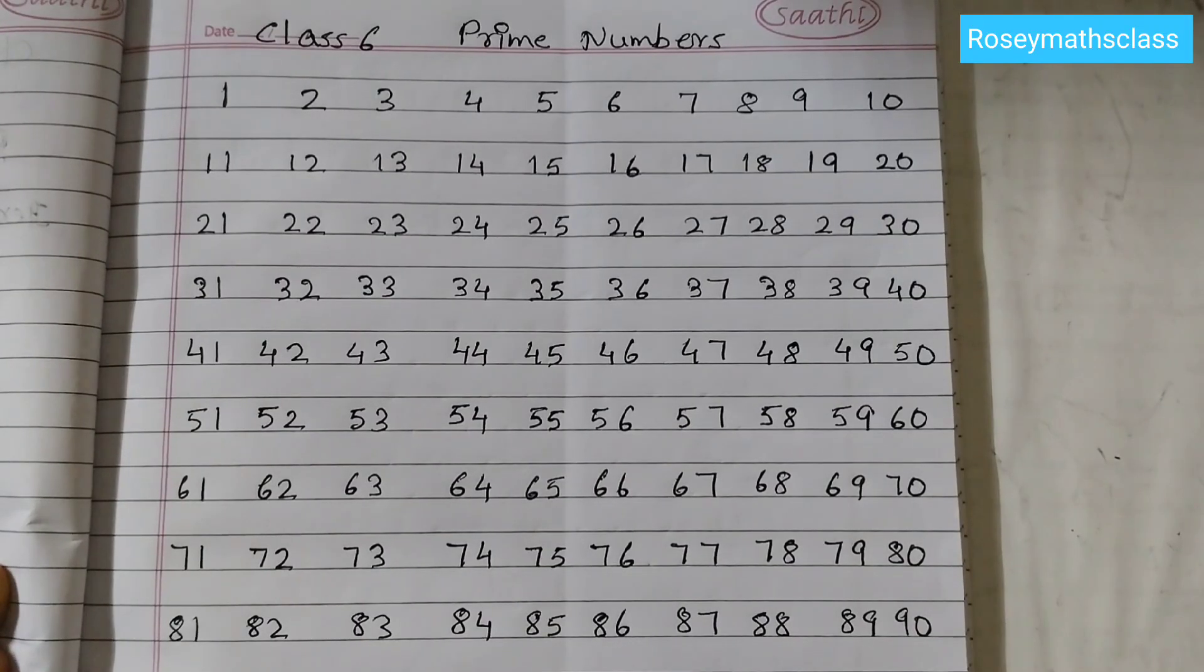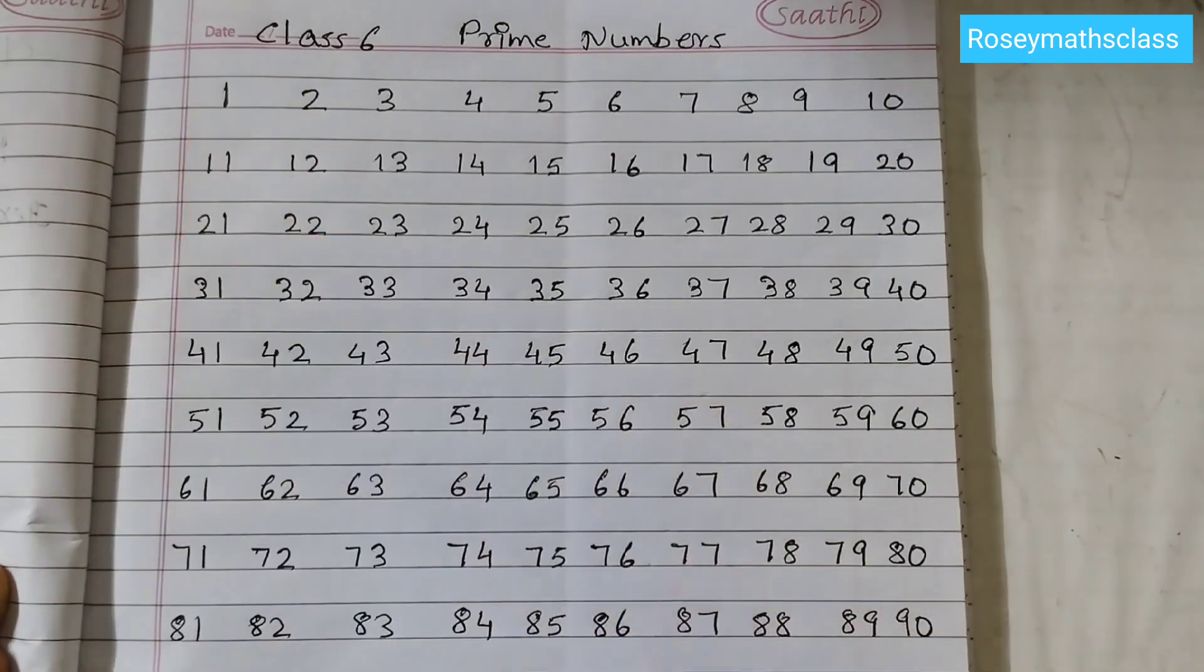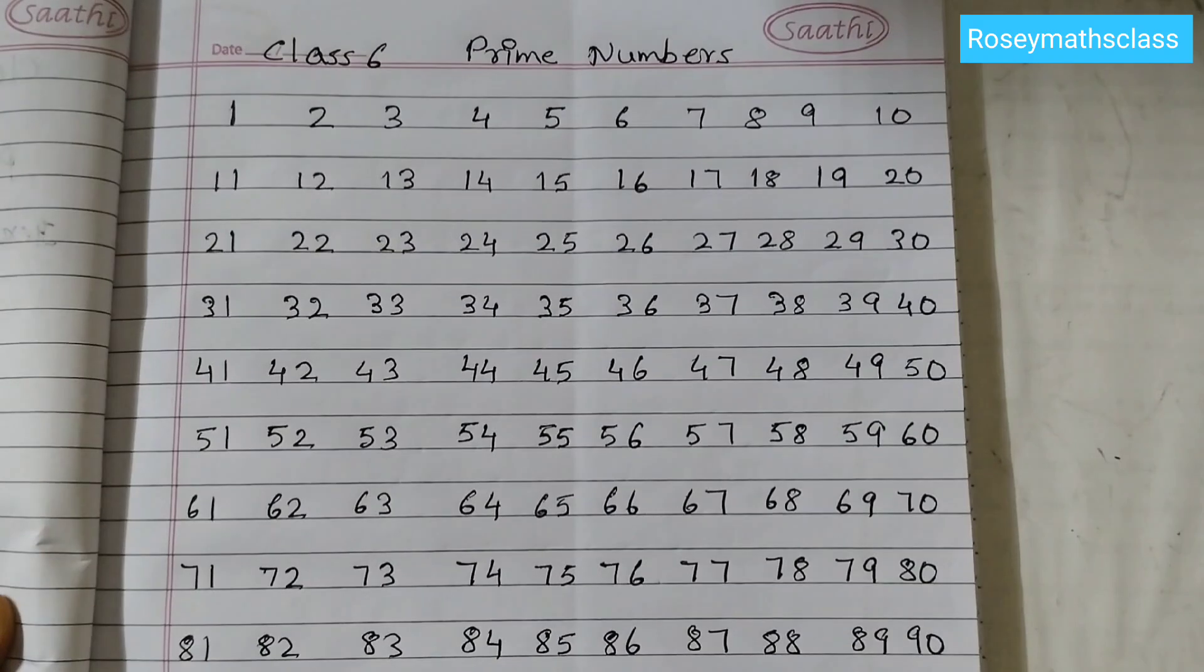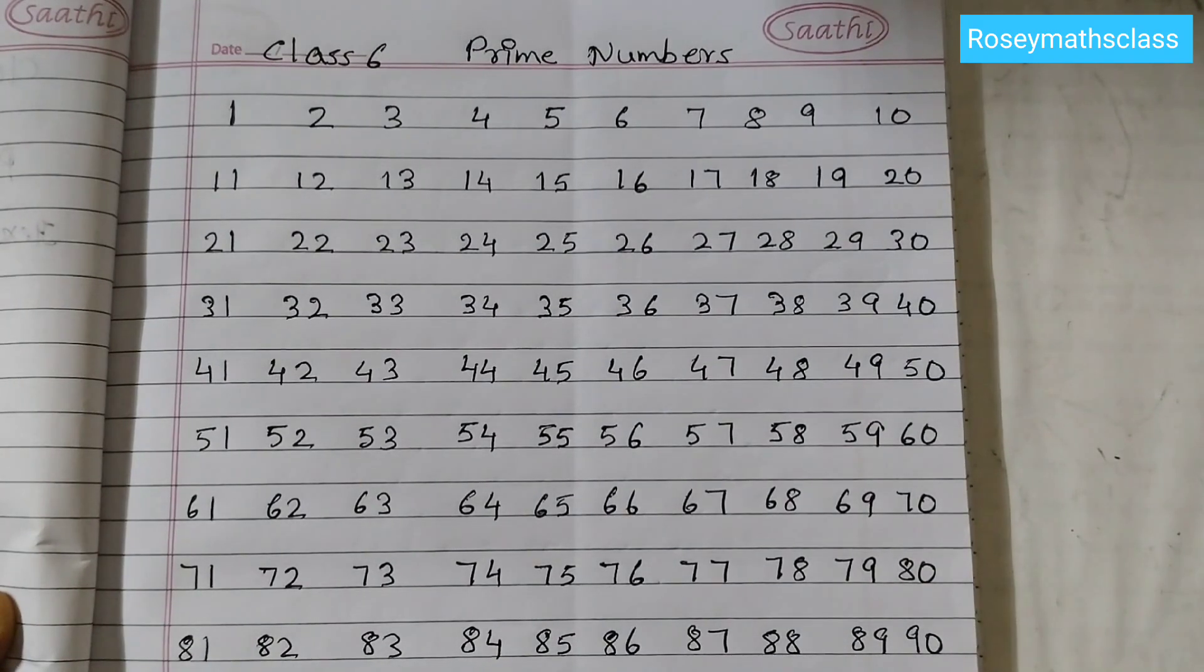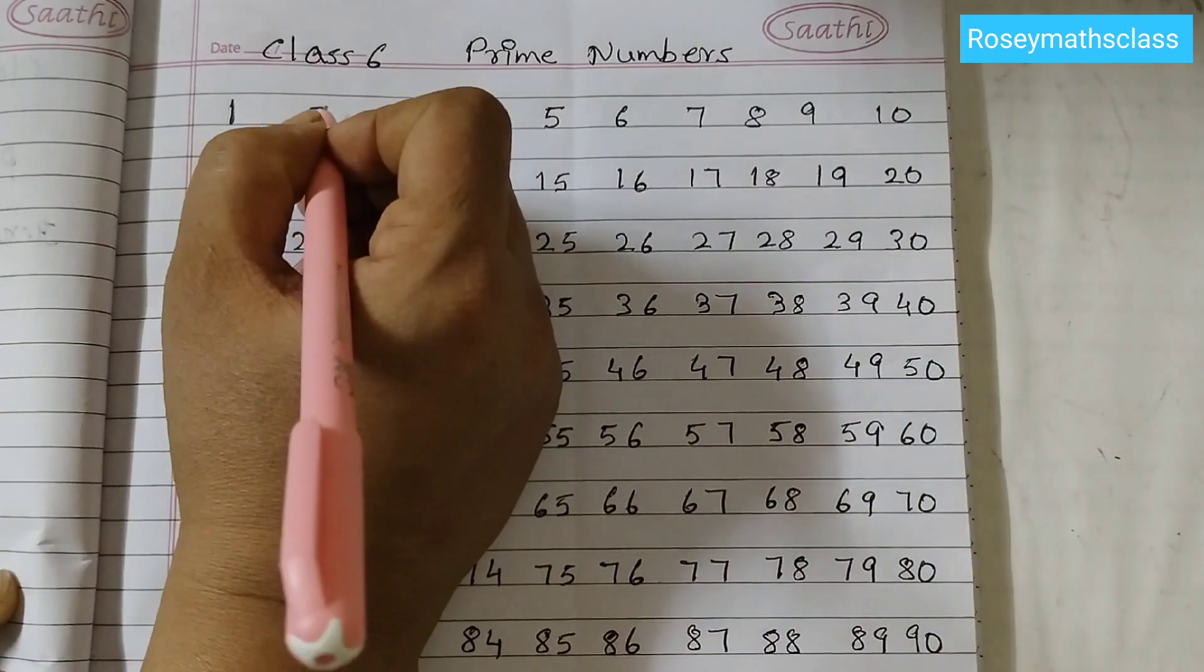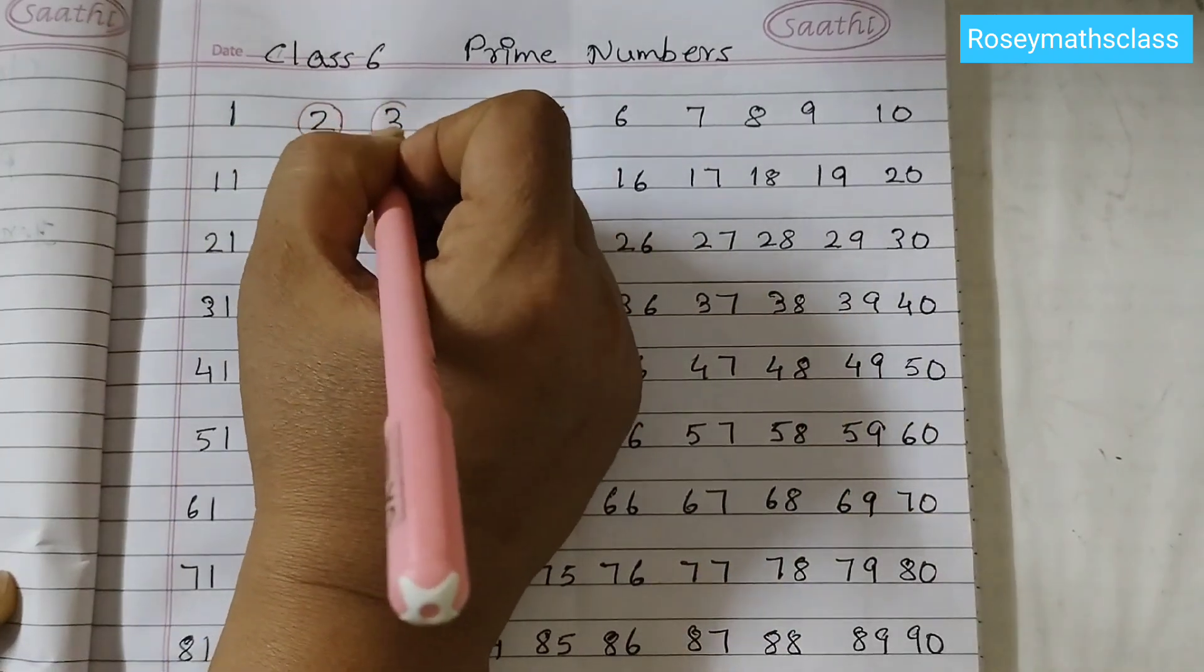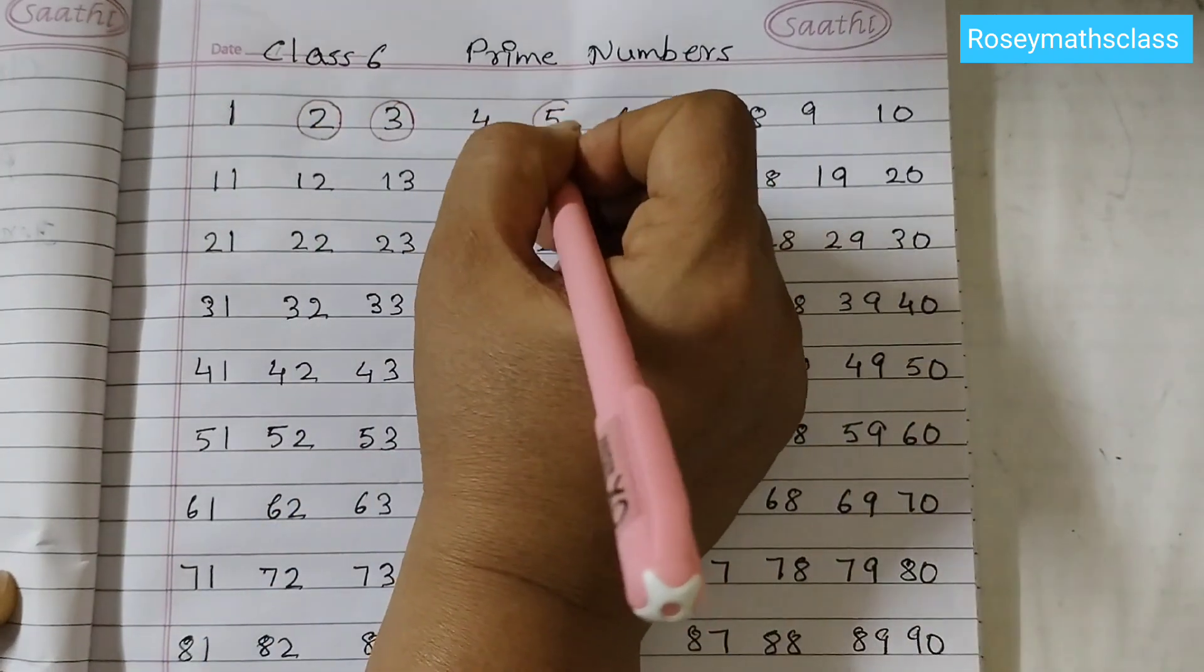Hello students, today we shall list all the prime numbers from 1 to 100. I have written all the numbers till 100 and we are going to list all the prime numbers. Prime numbers are those numbers which has exactly two factors: one and the number itself.